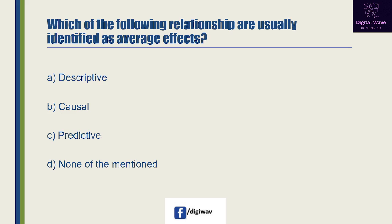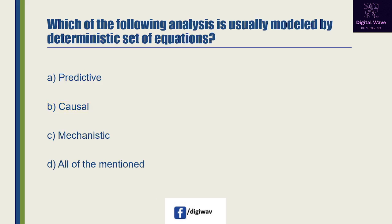Next question: which of the following relationships are usually identified as average effects? Option A is 'descriptive', option B is 'causal', option C is 'predictive', and the last option is none of the mentioned. The right answer will be B: causal, because a correlation is a measure or degree of relationship between two variables.